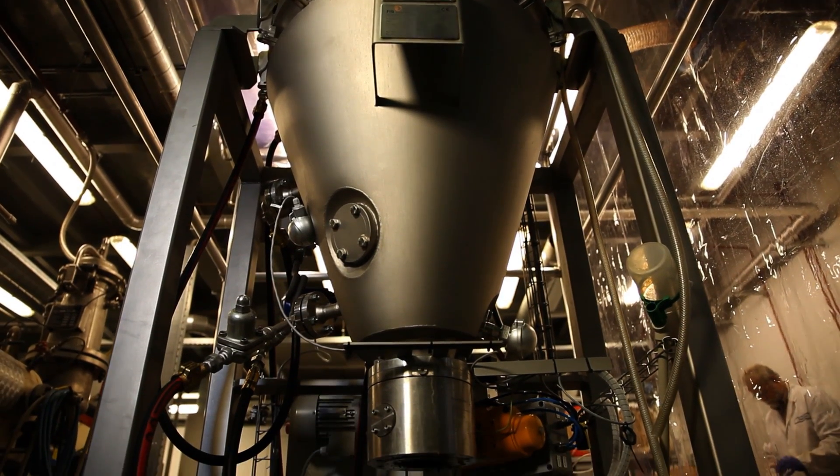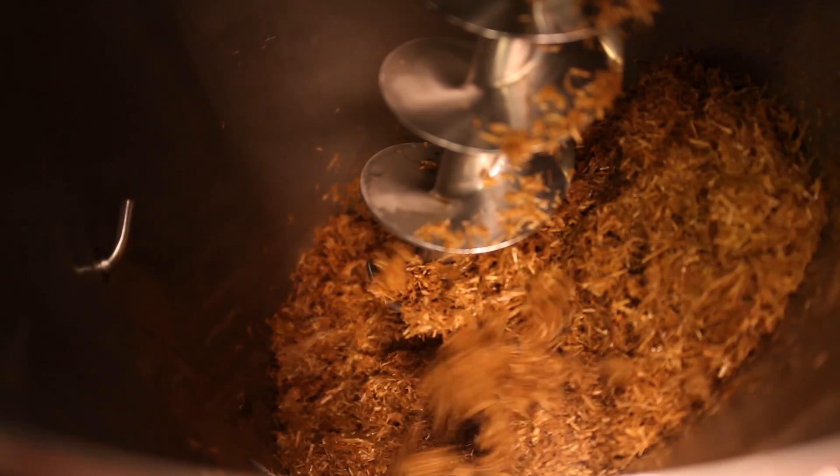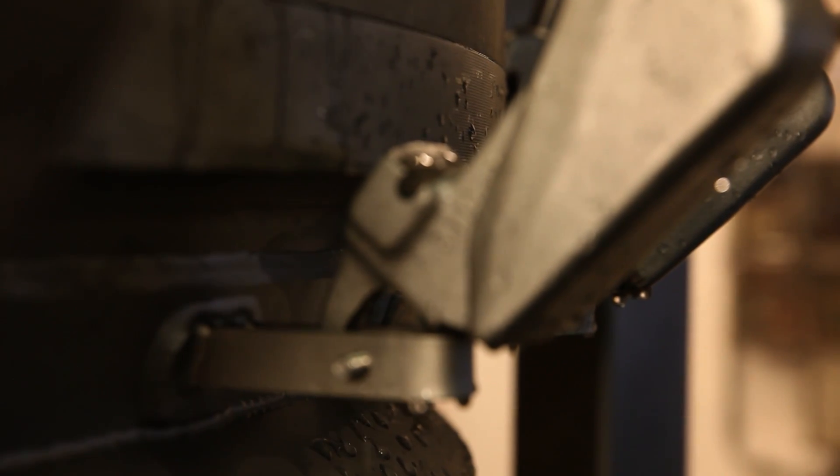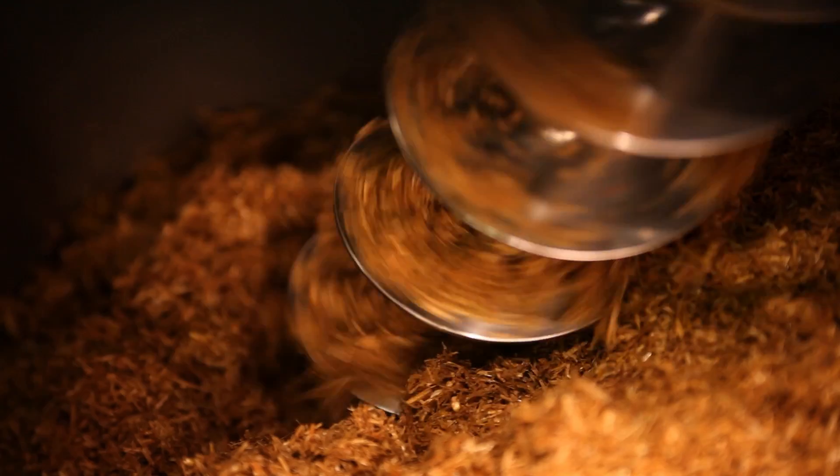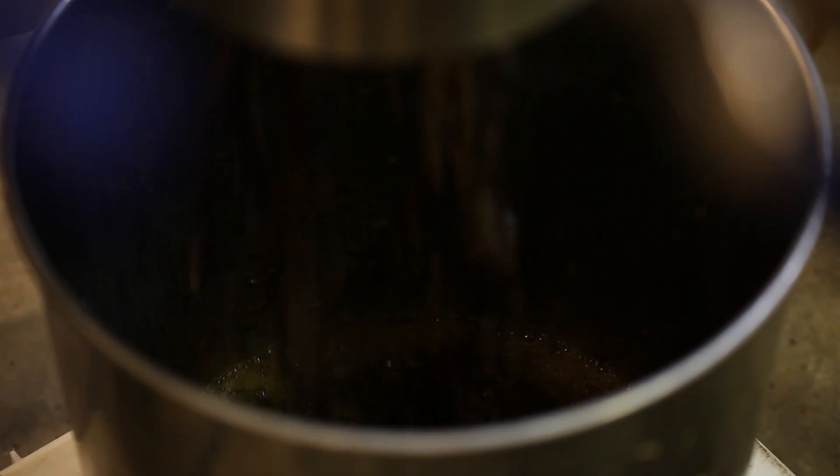Biorefinery often starts with pretreatment. This step allows us to make the components in biomass accessible. Depending on the biomass or the desired main product, different methods can be applied, such as chemical, enzymatic and mechanical pretreatment.